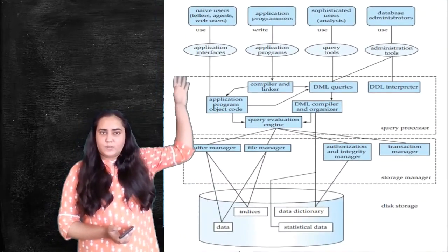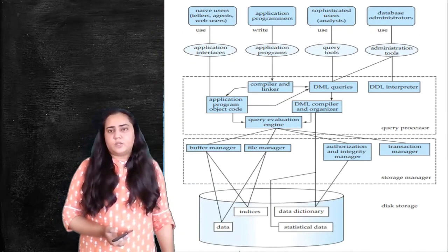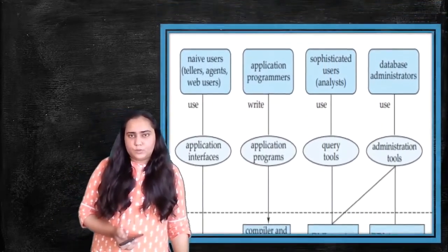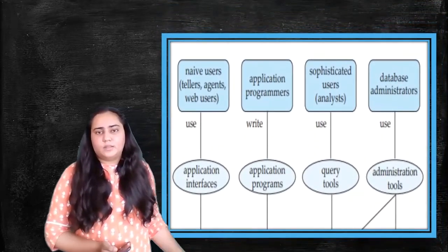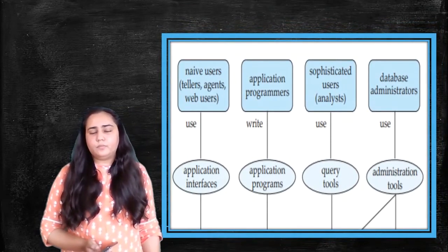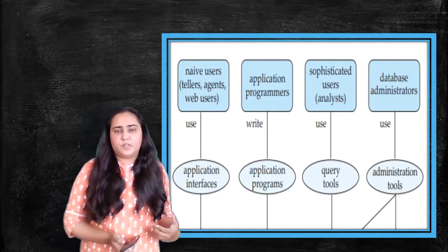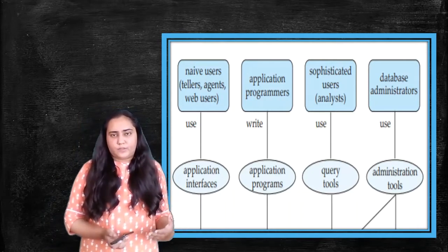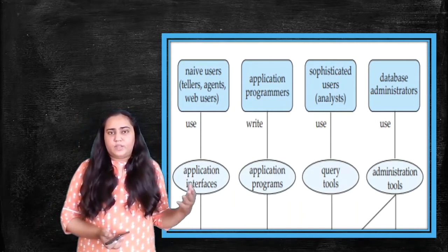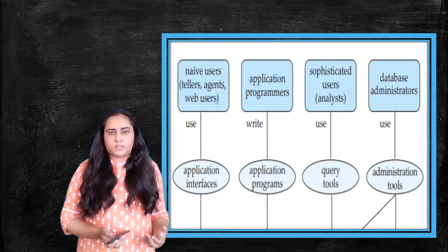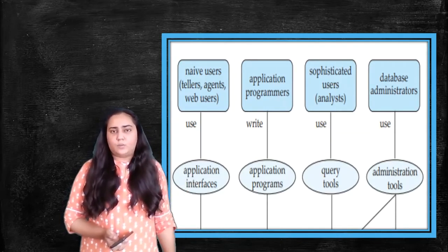And now whatever is on the topmost part, you can see that's what we're going to take a look at. So this is the topmost part of the diagram. Here you can see different types of users of the database and what they are doing and how they are using the database.